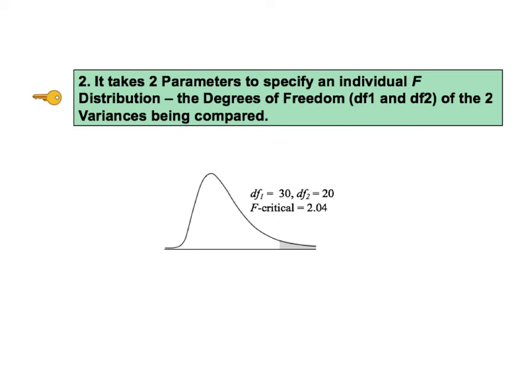F is a continuous distribution. Its curve has a smooth shape, unlike the stair-step shape of discrete data distributions like binomial. However, the F distribution can work with discrete data also.